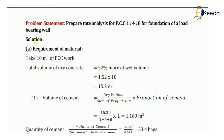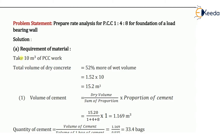Let's start with the solution. First we have to determine what materials will be required for the PCC work. We will calculate the material requirement. Remember, if the unit of measurement is in cubic meter, then assume the quantity of work as 10 cubic meters if it is not given in the problem statement. In our problem, the quantity of PCC work is not mentioned, so we will assume 10 cubic meters.